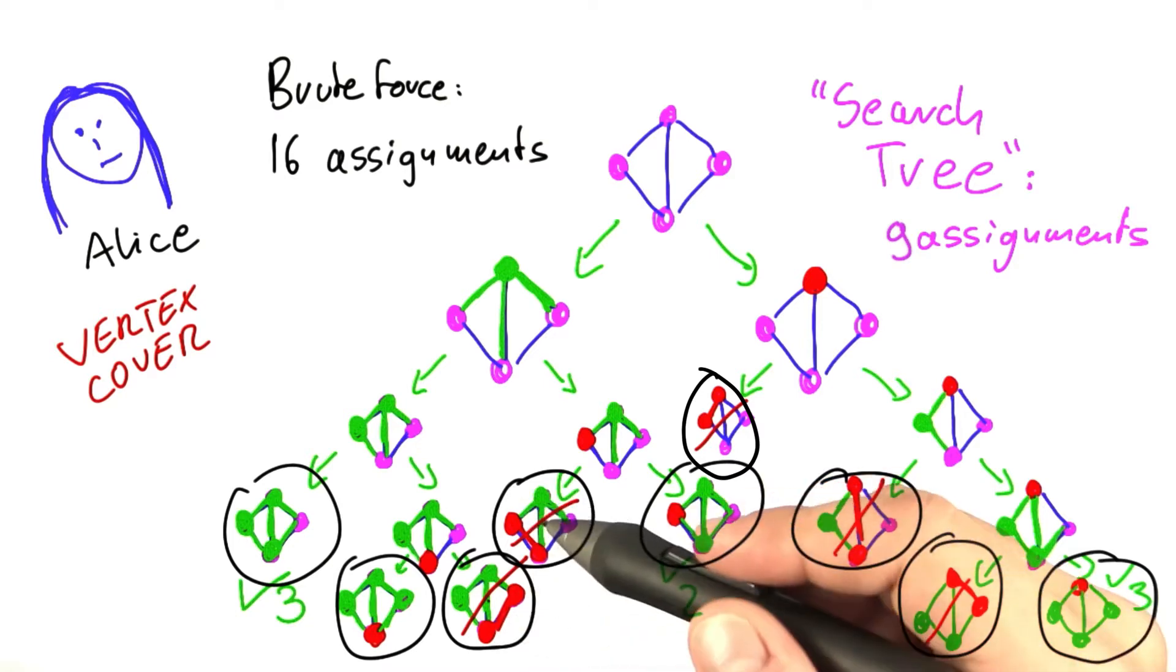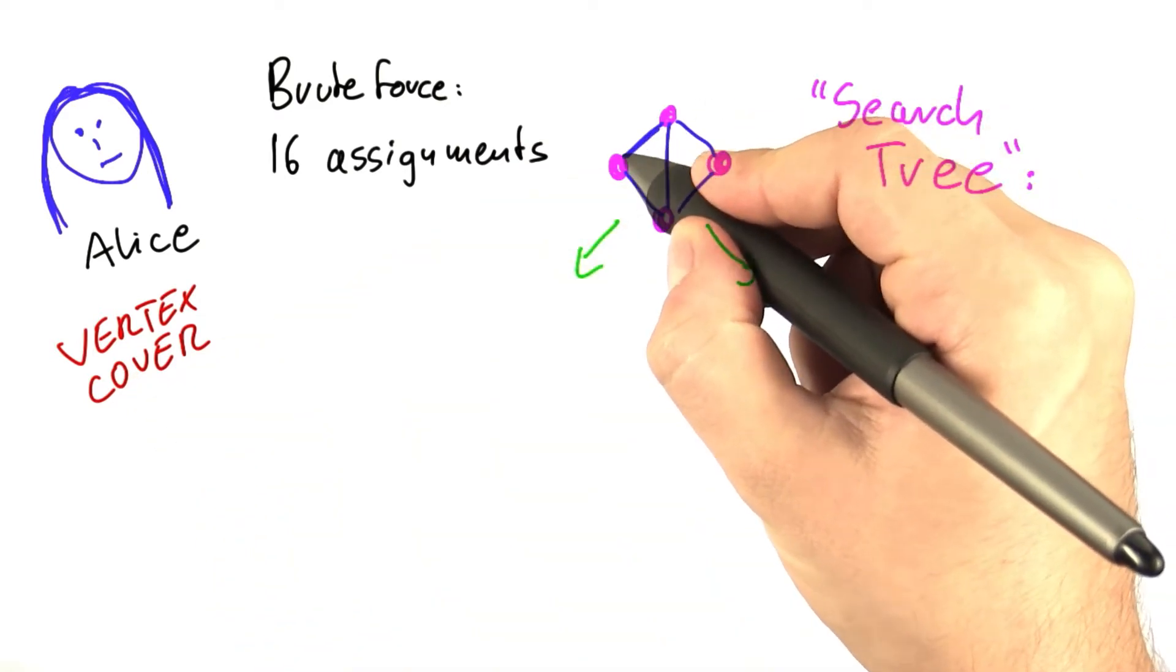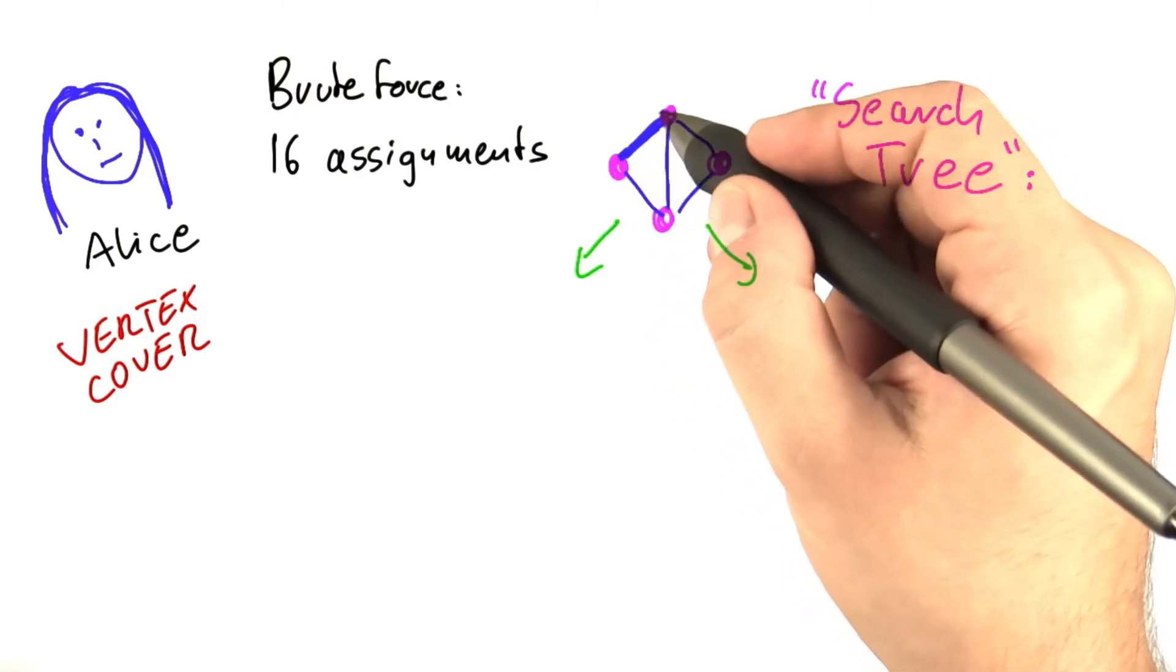Actually doing it this way is not the smartest possible way. Because for vertex cover, we already know one thing. If you look at an edge such as this one here, then this edge here has two endpoints.